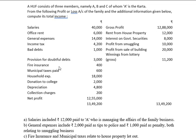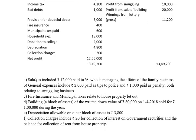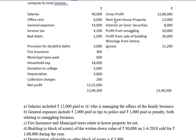The profit and loss account is given here. First we have to compute the business income taking into consideration the net profit. Then we have to compute income from house property from the rent received. Interest on government securities relates to income from other sources. Then profit from sale of building gives us capital gains. Winnings from lottery and profit from smuggling business fall under income from other sources.